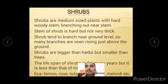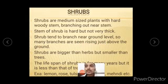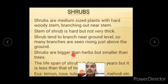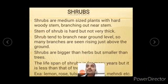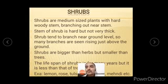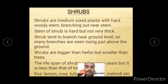Shrubs tend to branch near ground level, so many branches are seen rising just above the ground, meaning the whole plant is covered with branches. Shrubs are bigger than herbs but smaller than trees. So we can categorize shrubs as being in between herbs and trees.